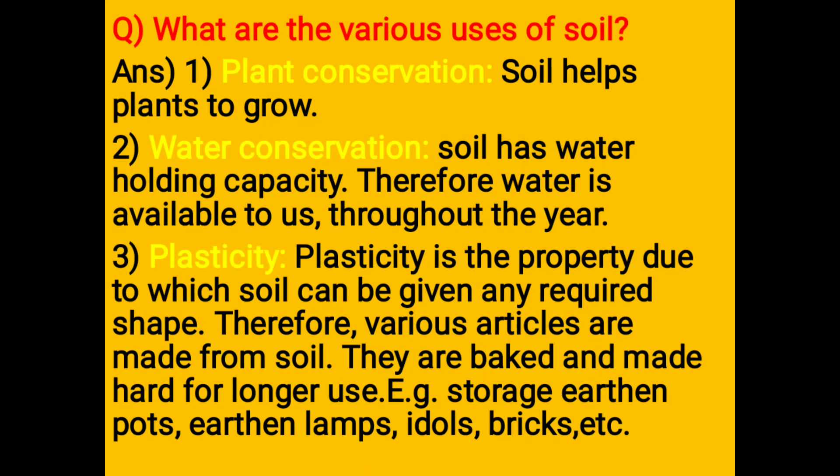What are the various uses of soil? 1. Plant conservation — Soil helps plants to grow. 2. Water conservation — Soil has water holding capacity, therefore water is available throughout the year. 3. Plasticity — Plasticity is the property due to which soil can be given any required shape. Various articles are made from soil, baked and made hard for longer use. Examples: storage earthen pots, earthen lamps, idols, bricks, etc.